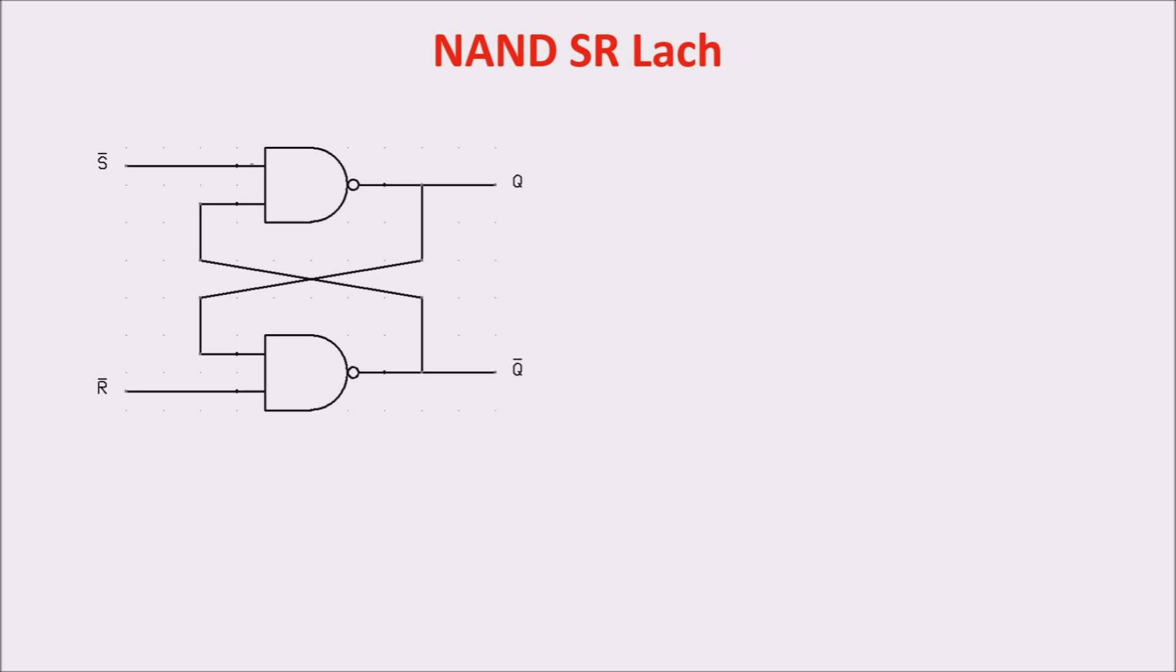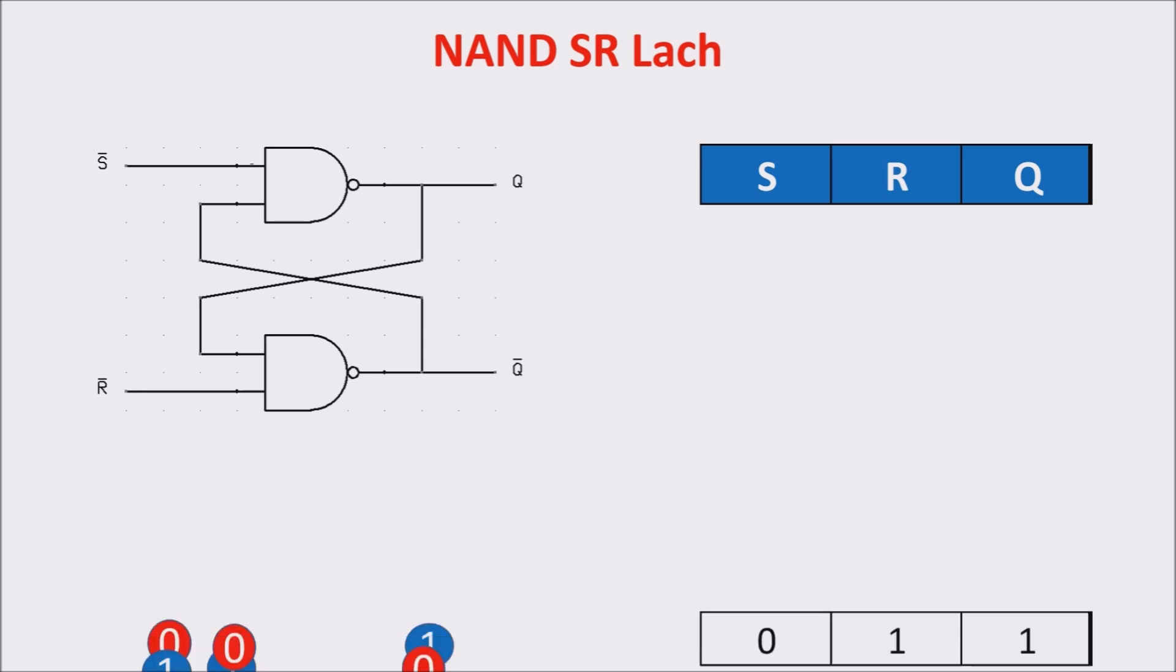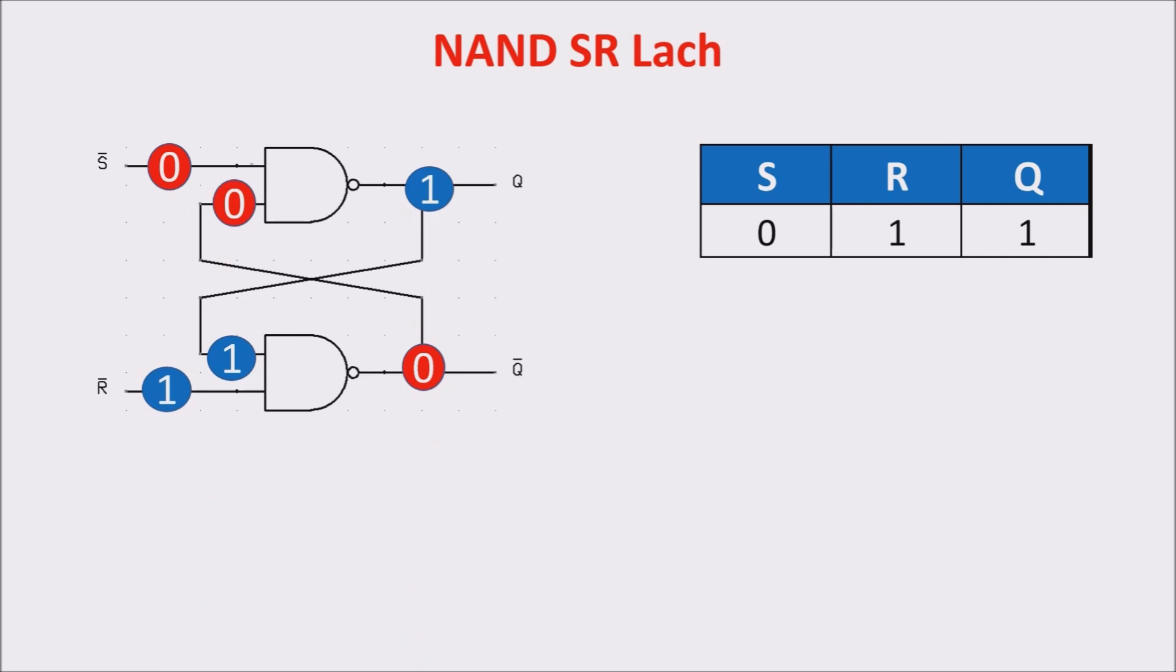Let's see the truth table of the NAND SR latch. The inputs are SET and RESET and the output is Q. We leave out NOT Q because it is always the opposite of Q. If we give a zero pulse to S, keeping RESET to one, we get one on the output.